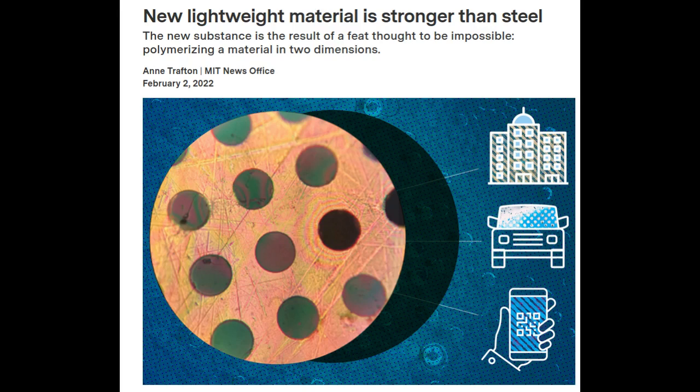One reason for this was that if just one monomer rotates up or down out of the plane of the growing sheet, the material will begin expanding in three dimensions, and the sheet-like structure will be lost.